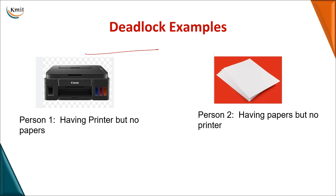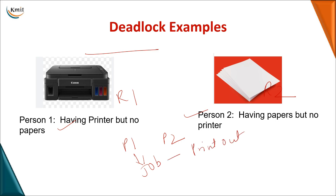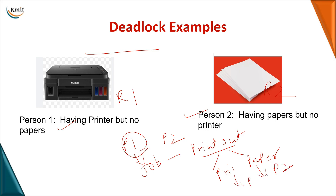Consider a real-world example: person one and person two represent process one and process two, with printer and paper as the two resources. Person one wants to take a printout, which requires both a printer and paper. Paper is with person two and the printer is with person one. So person one is waiting for the paper, whereas person two is waiting for the printer. Each holds one resource and waits for the other, so both are blocked and neither can continue execution.